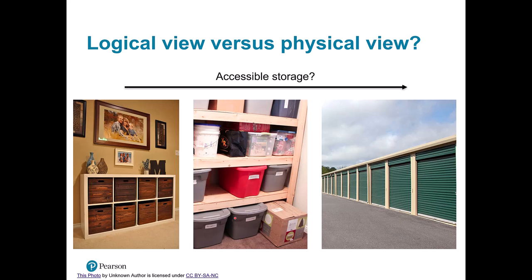We can think about logical views versus physical views using the Christmas tree lights analogy. Data you need regularly you want to store in an easily accessible location. Data that's not as common you put in slower, cheaper storage. If I only need my Christmas tree lights once a year, I don't want to store them in a cupboard in the entryway because that's high-value storage. I might put them in my basement or an external storage unit — cheaper, but slower to access. Because I don't need them often, that's a great place to put them.